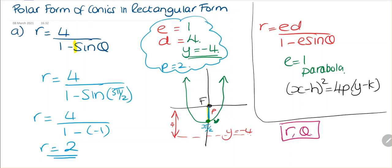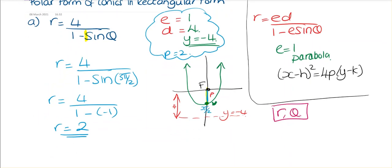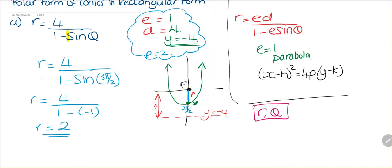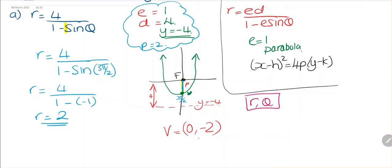Now we need to find our h and our k. We know the vertex is 2 units from the focus, which is at (0, 0). So the vertex is going to be at (0, minus 2). This gives us our h and k values. We've got all the information we need, so we just substitute into our equation for a parabola.